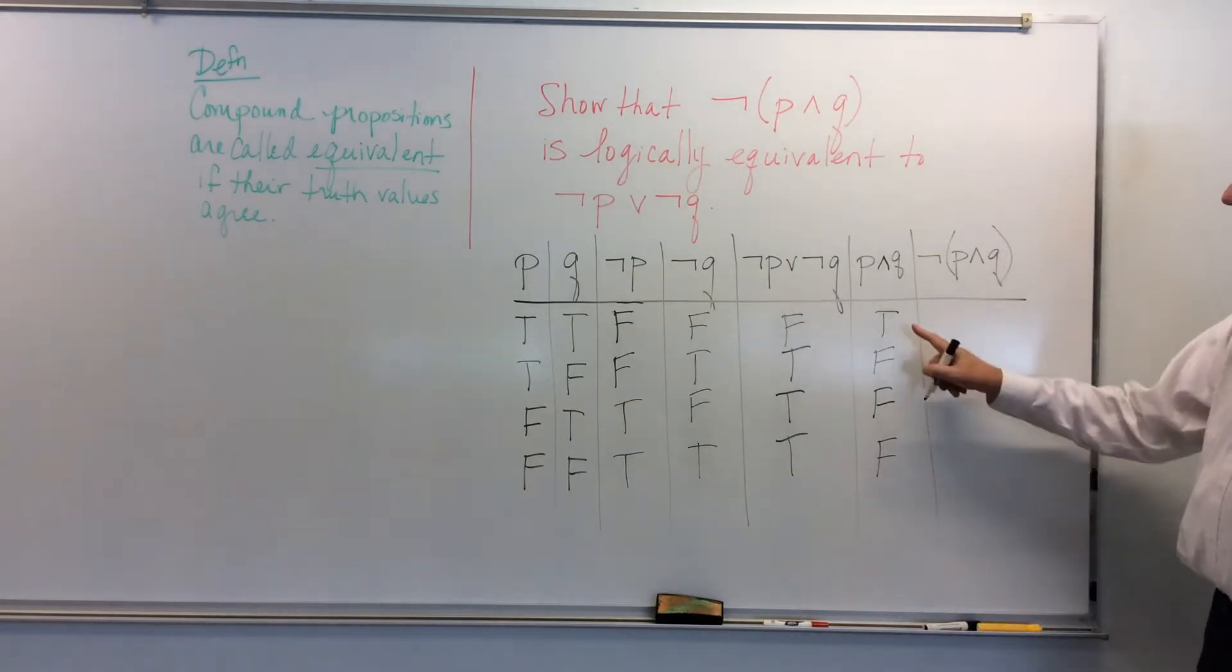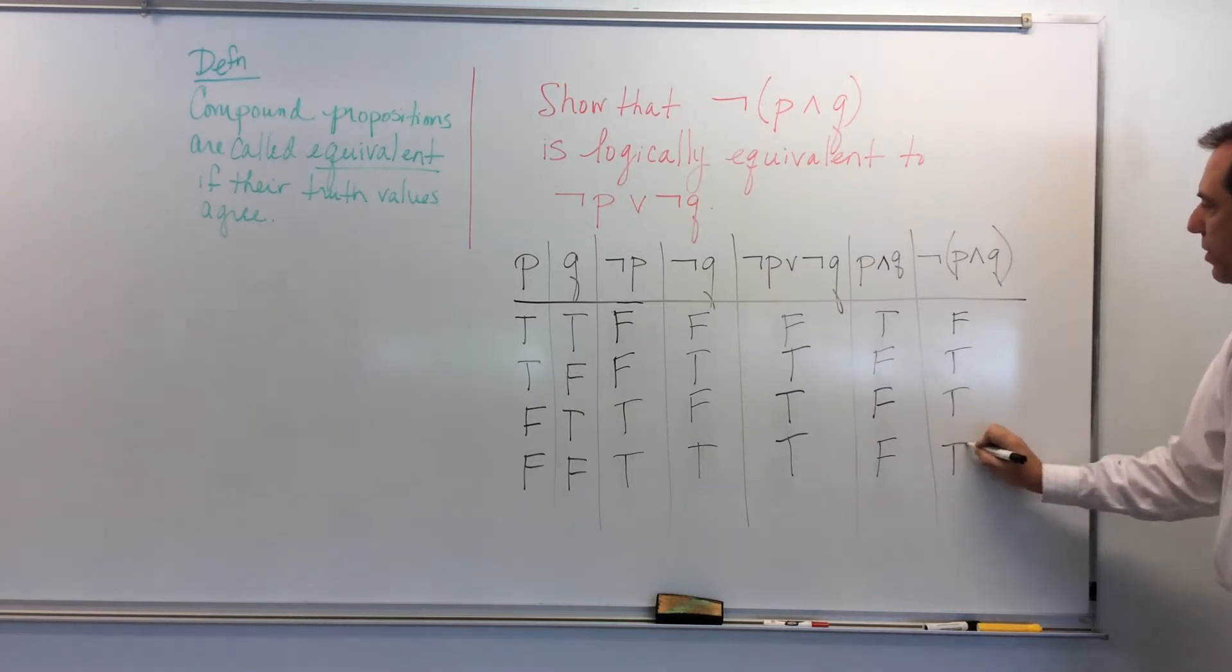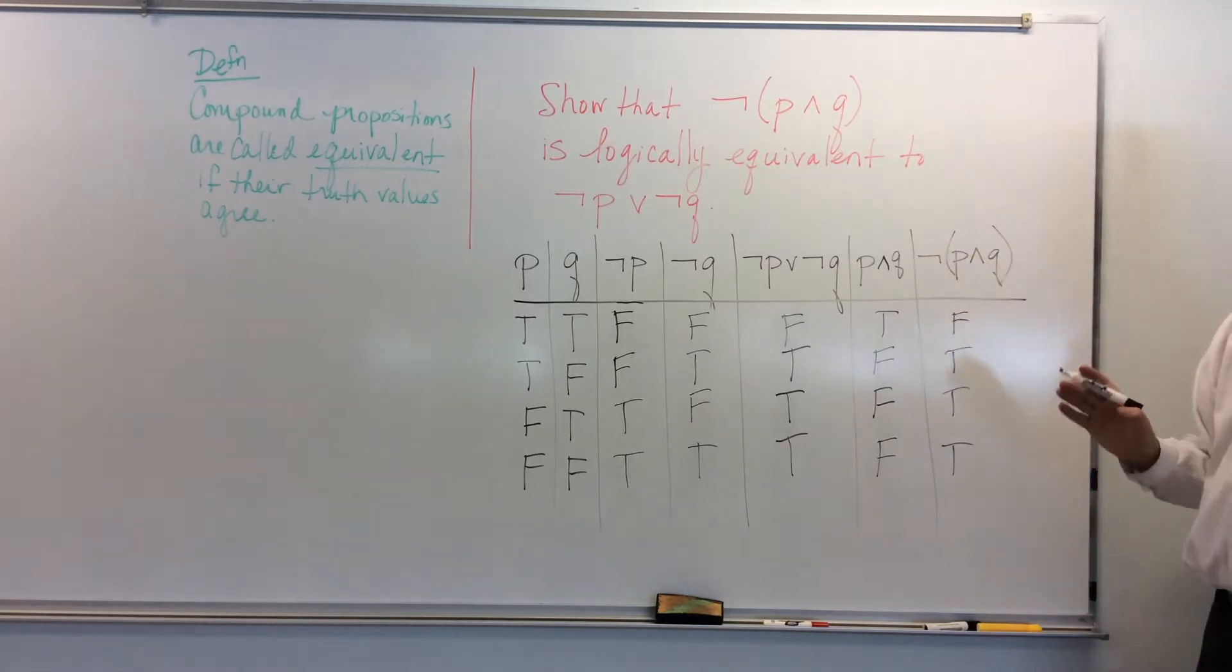Okay, now I'm going to negate this guy right here. And so this becomes false, and then true, and then true, and then true. So all I did was negate this column, because that's what this negative sign is telling me, the negation sign is telling me.